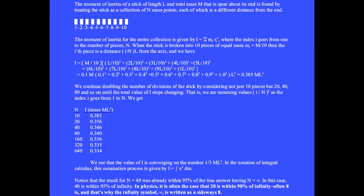In the notation of integral calculus, this summation process is given by I equals the integral of x squared dm. Notice that the result for n equal 40 was already within 95% of the true answer having n equal infinity. In physics, it is often the case that 20 is within 90% of infinity, and often 8 is — and that's why the infinity symbol is written as a sideways 8. It seems strange that this continued doubling of the number of pieces could produce any meaningful result, but that's actually the way all of today's science and engineering is done. This is integral calculus.